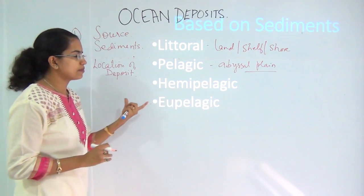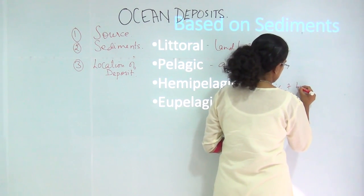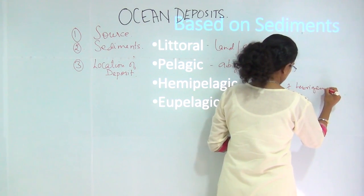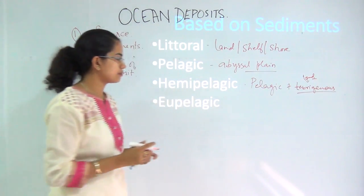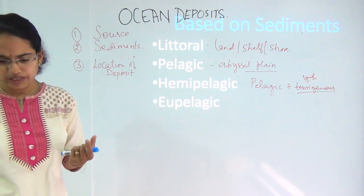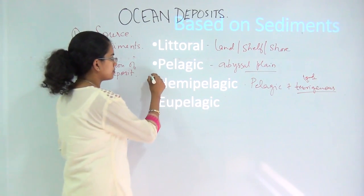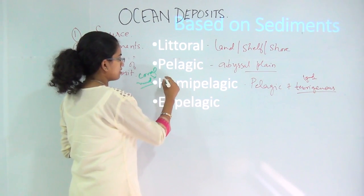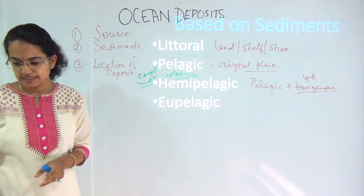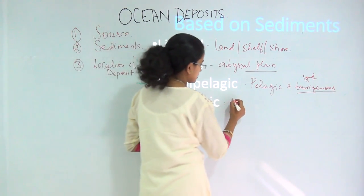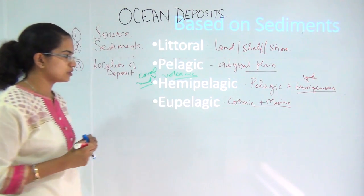You have hemipelagic sediments, which include the pelagic and the terrigenous deposits — those coming from land and some coming from the pelagic regions, usually in the form of green volcanic ash and coral muds. Finally, the last one is the eupelagic, which includes cosmic and marine structures. You can find cosmic and marine deposits in the eupelagic zones — the best examples are red clay, radiolarians, pteropods, globigerina, and so on.